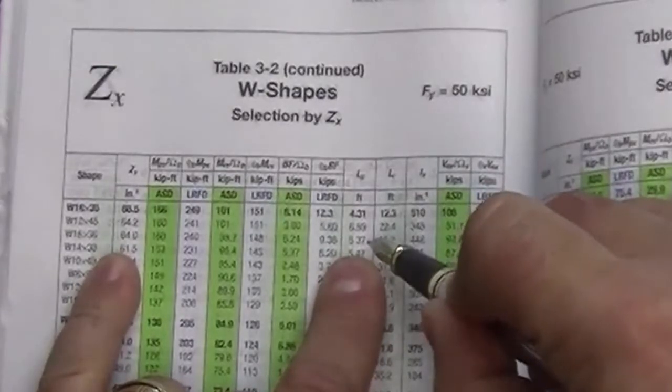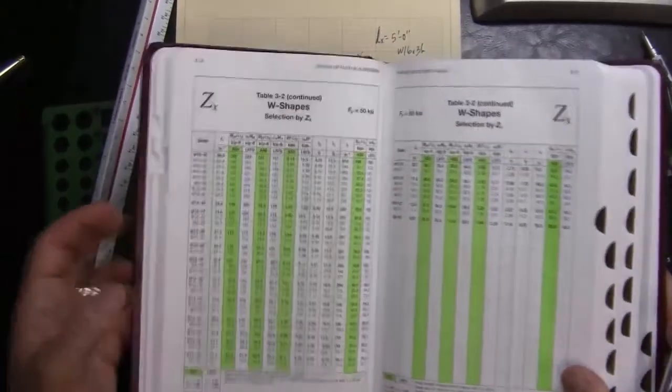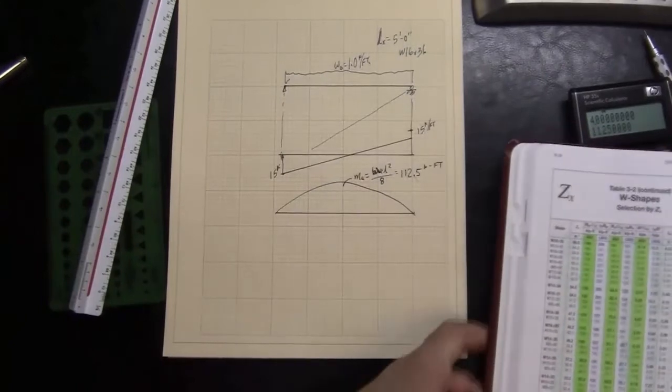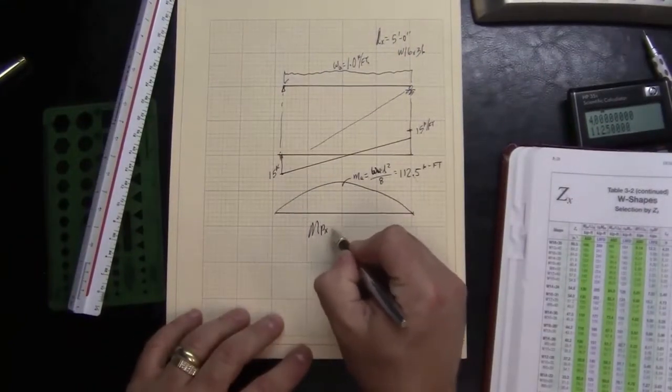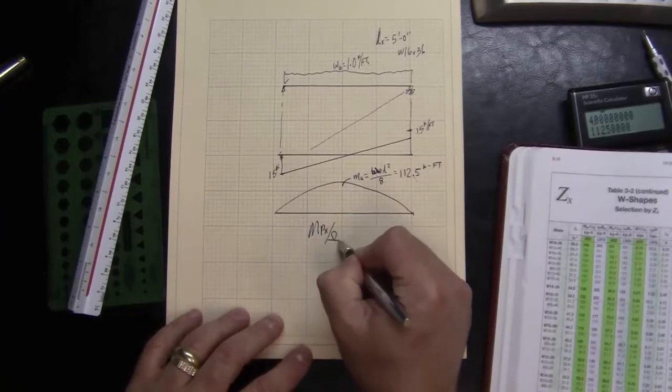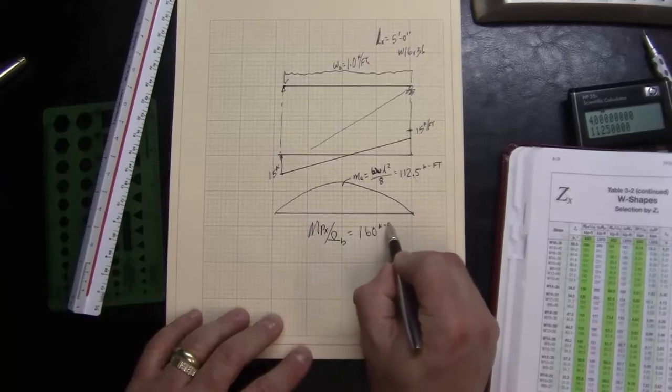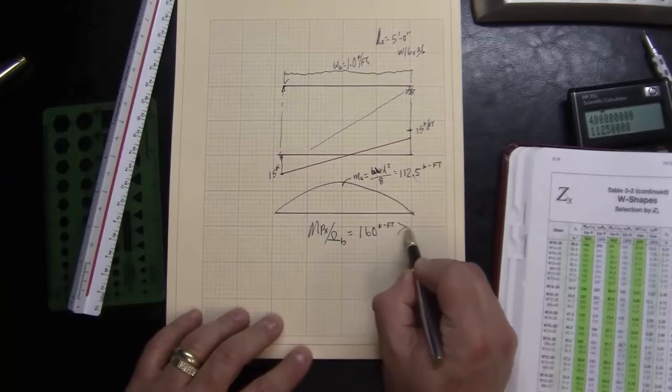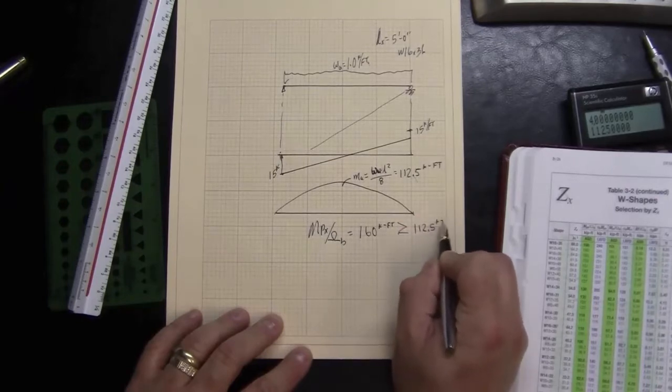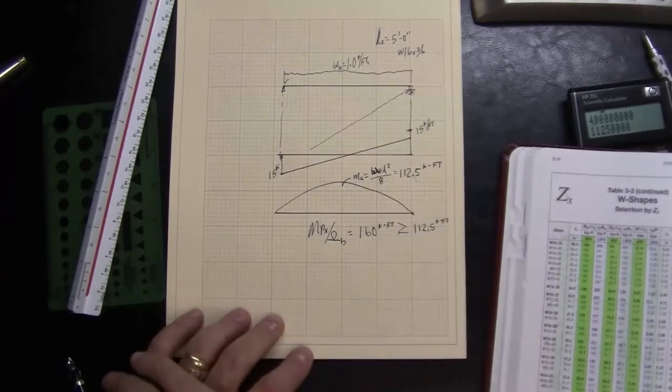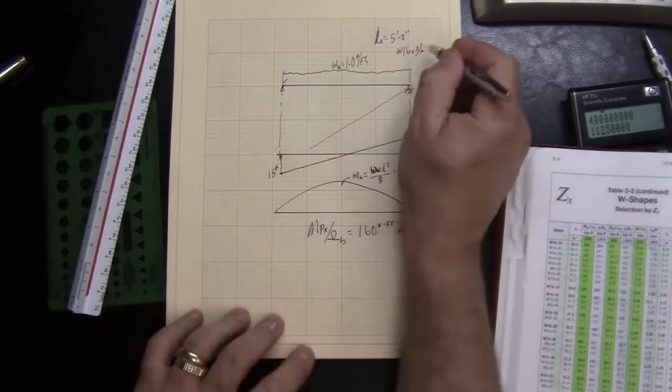And what that's telling me is I'm going to get the full MPX load. For the factor of safety will be 160 kip feet, and that is greater than or equal to 112 kip feet. And so I'm feeling like that member size is a good place to start.